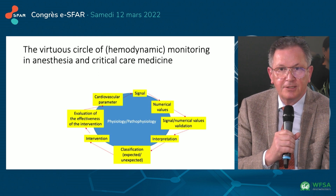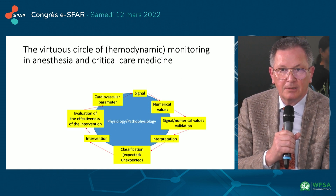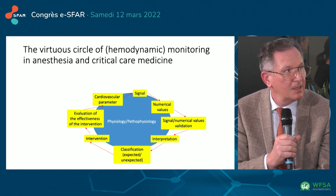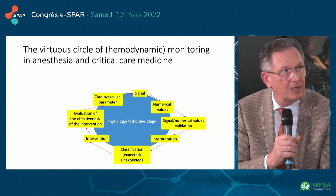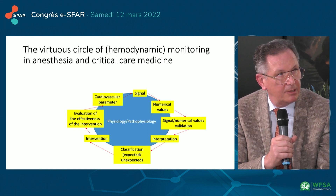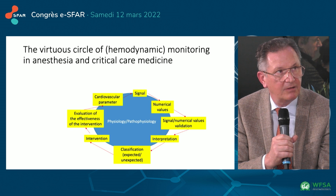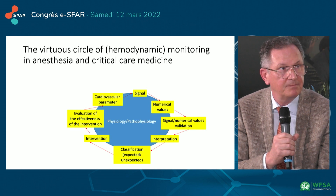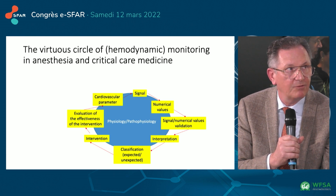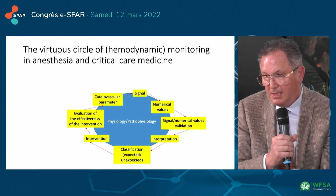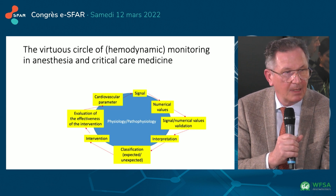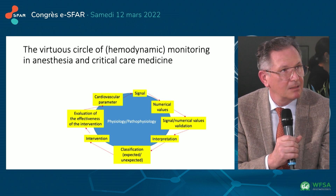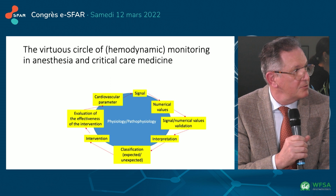As a clinician — and now artificial intelligence can begin to do this — you cross-validate the signal and the numerical value. So when you decide to put a closed loop on a numerical value, you need to be sure your signal actually validates that numerical value and vice versa. Once you have done this, you have to interpret: is this hypotension? And then you need to classify — it can be abnormal but expected, and you would not classify it as pathologic, because you understand what's going on.